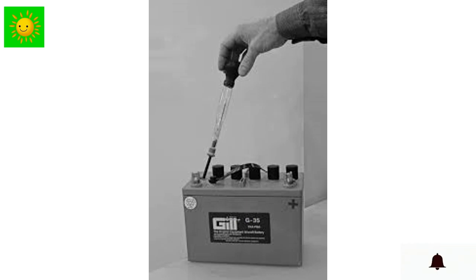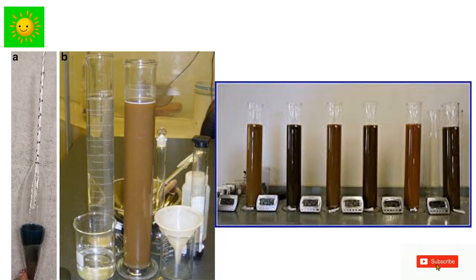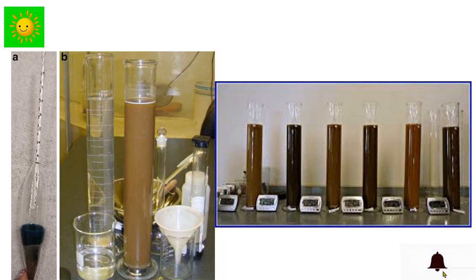The density of acid changes according to changes in lead acid batteries used in vehicles. Therefore, the condition of batteries can be examined by measuring the density using a hydrometer. A soil hydrometer is used to determine the composition of a soil sample by dissolving a constant mass of soil in a constant volume of water to calculate the density of the soil solution.